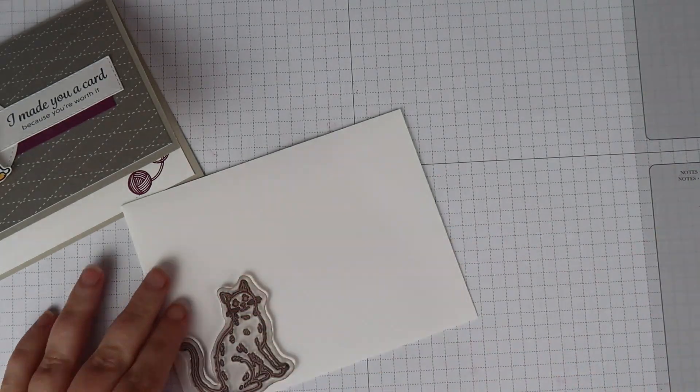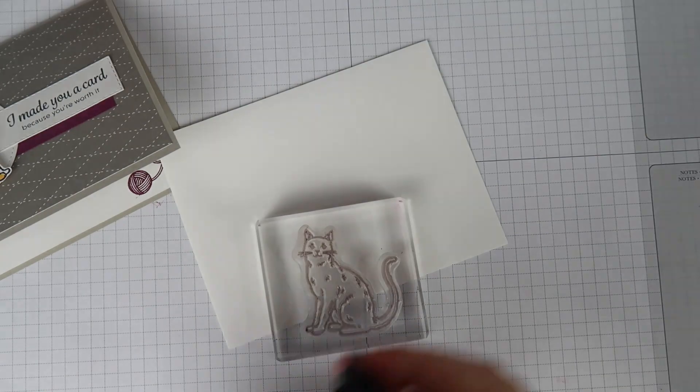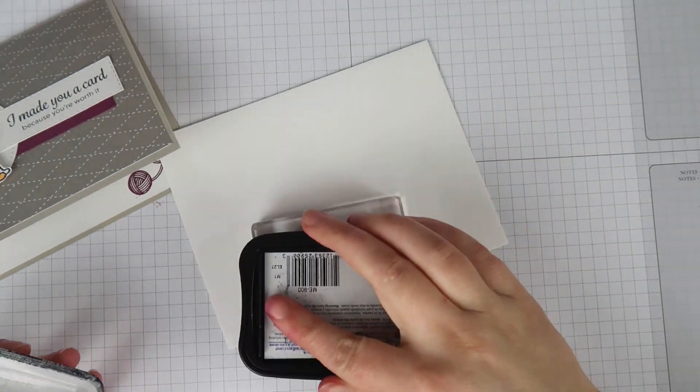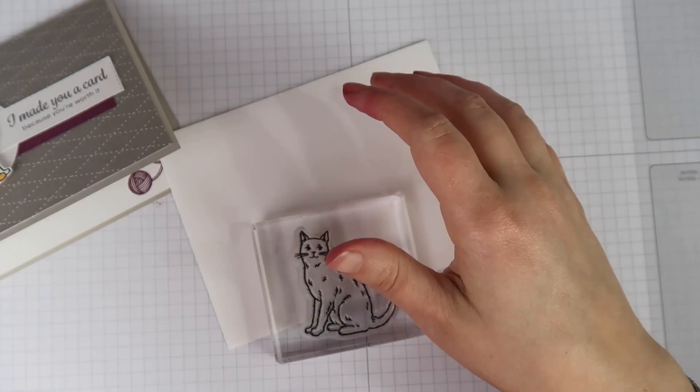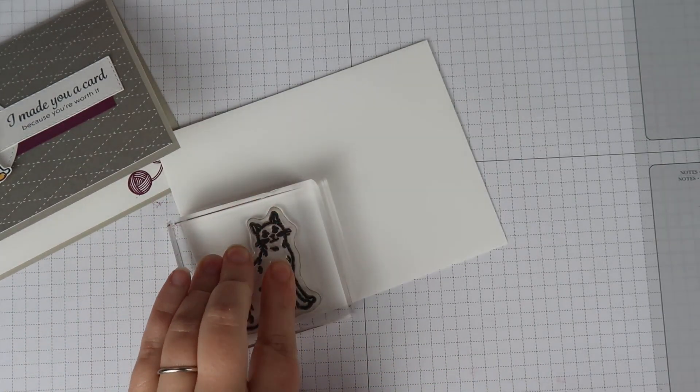The last thing I want to do is the envelope. So for this envelope, I'm going to take my cat stamp outline and I'm just using a block for this. I'm just going to stamp it down in the corner and I'm not doing any two-step stamping or anything. Just keeping it very, very basic.